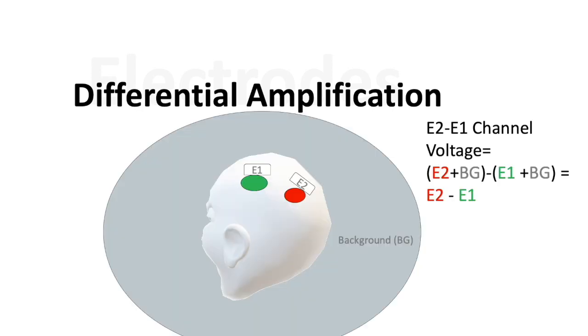Here is a practical schematic of this. So when we talk about background noise, think of that as this gray area. So if we're comparing E1 to E2, then we have E2 plus the background noise minus E1 plus the background noise. And what we're left with is just E2 minus E1. So the background noise cancels out because it's about the same in both of these electrodes.